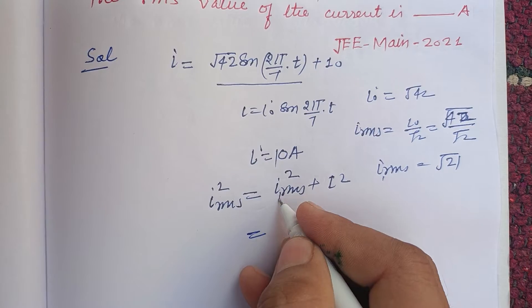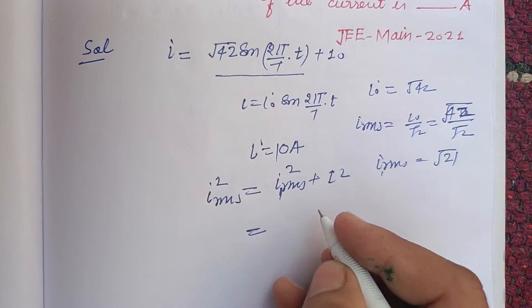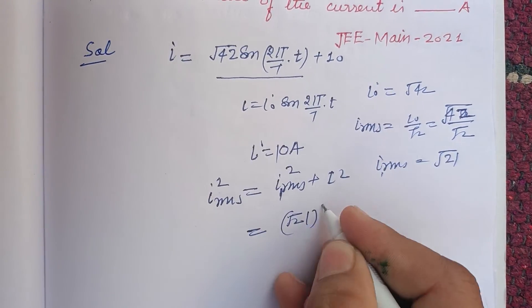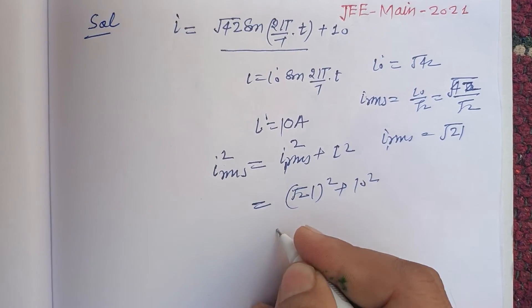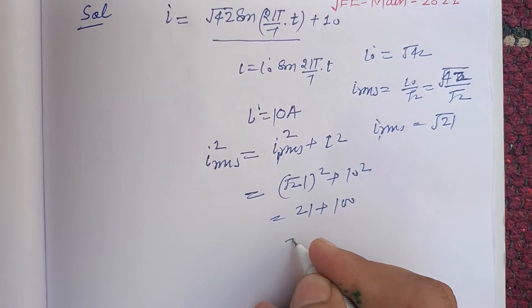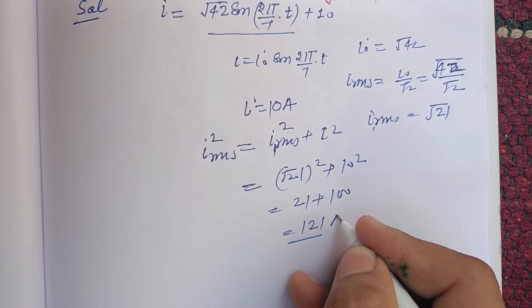So this is (√21)² plus 10², which is 21 plus 100, that equals 121 ampere squared.